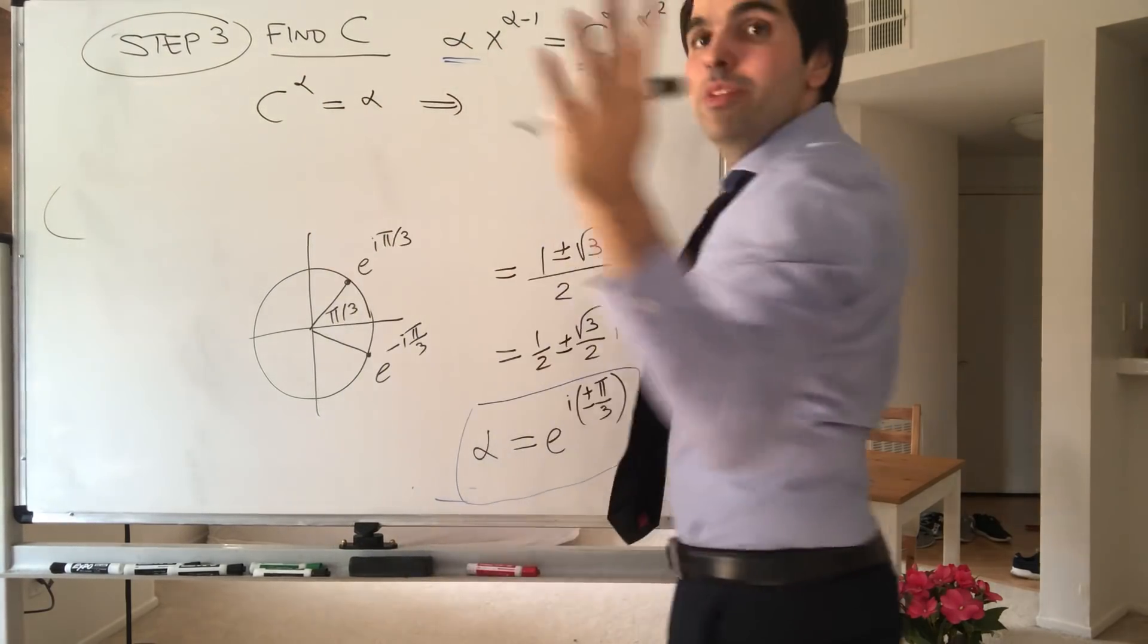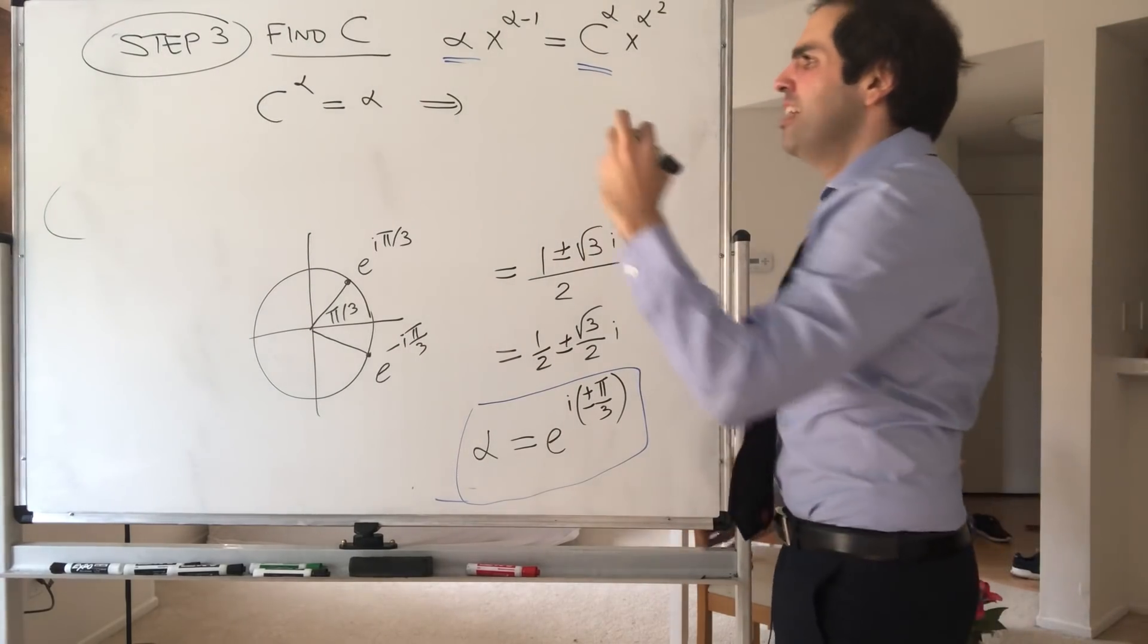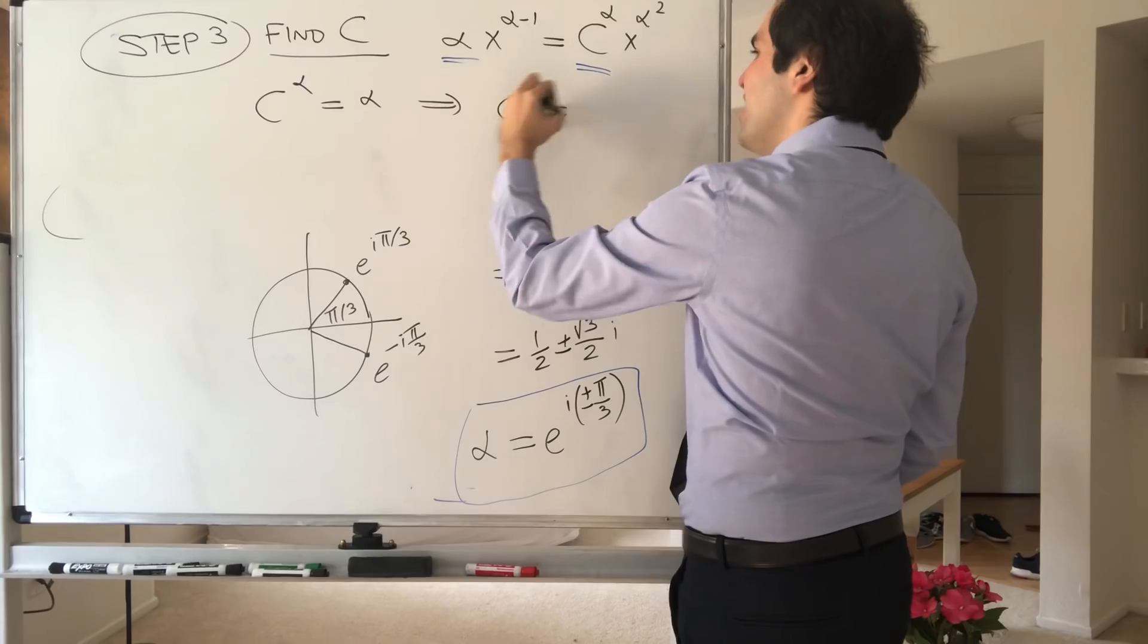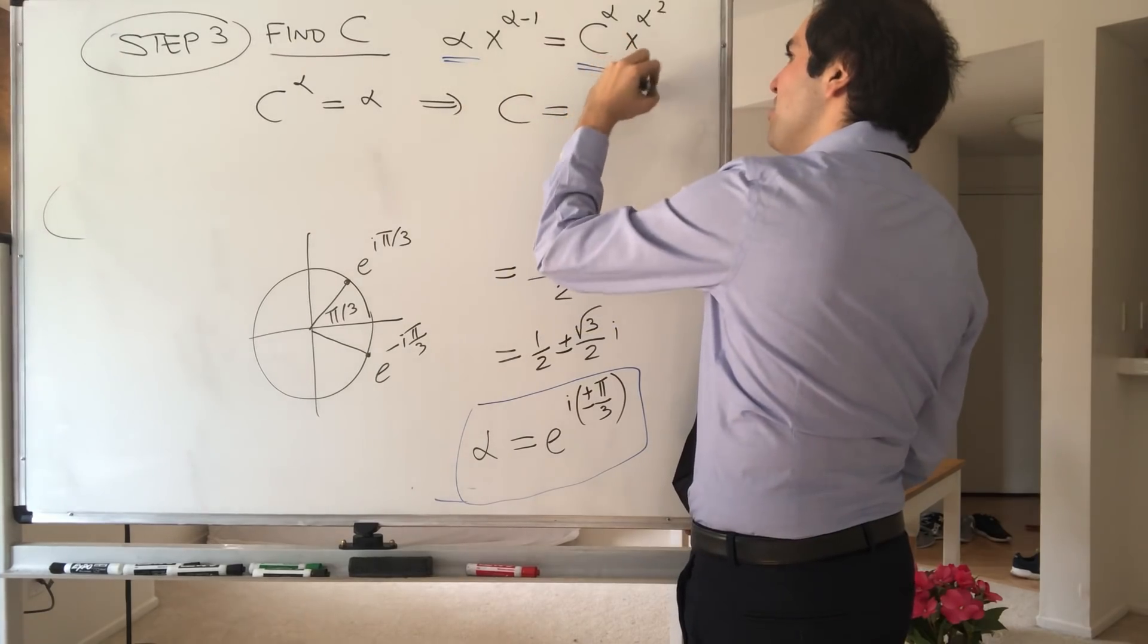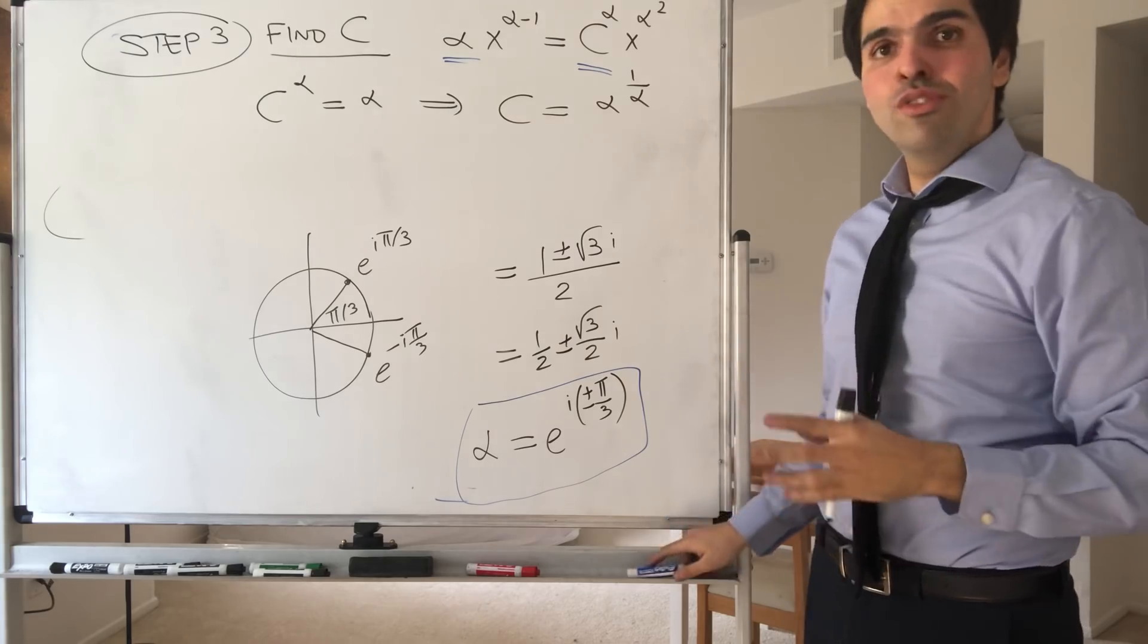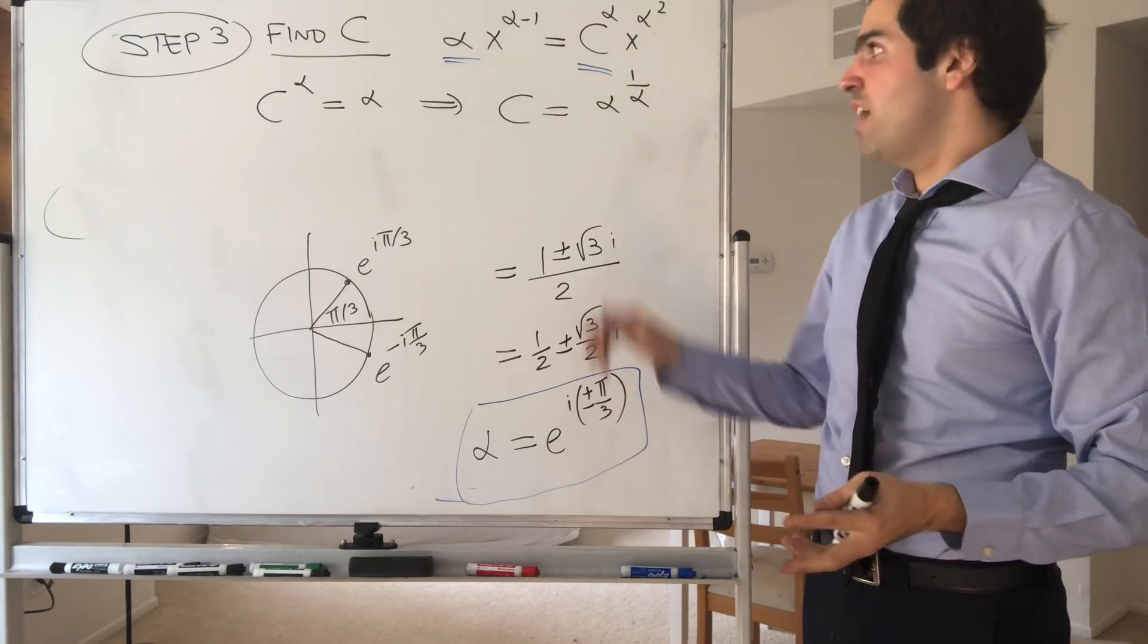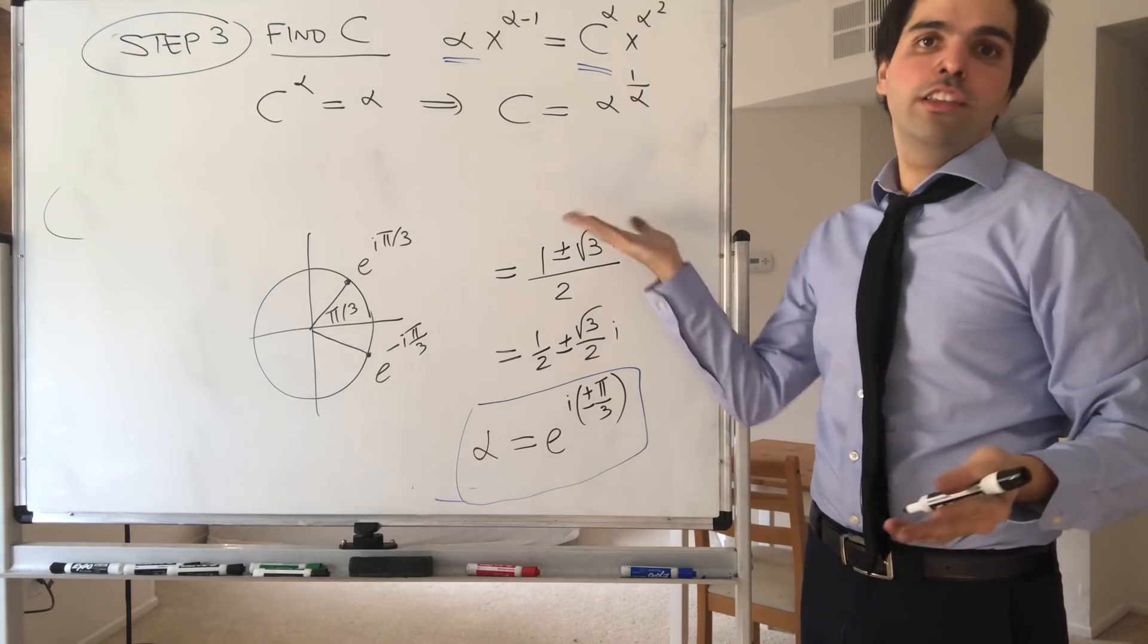Now there might be many solutions of this, and I'm just sweeping a lot of theory under the rug. But since this is very hand wavy anyway, let's do c equals alpha to the 1 over alpha. So just take alpha root of this. And the point is, because alpha has two different values, we need to argue in terms of cases.